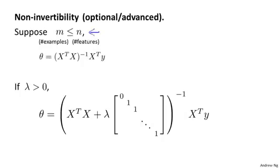Consider a setting where m, the number of examples, is less than or equal to n, the number of features. If you have fewer examples than features, then this matrix x transpose x will be non-invertible, or singular, or the other term for this is the matrix will be degenerate.